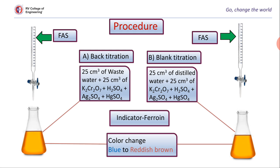Procedure: As mentioned, it consists of two parts — a back titration and a blank titration. For the back titration, 25 cm³ of wastewater is taken in a round-bottom flask. The same amount of potassium dichromate is added along with a sulphuric acid mixture containing silver sulphate and HgSO4. The resultant mixture is refluxed for about half an hour. After refluxing, the reaction mixture is cooled; it contains unreacted potassium dichromate. Its amount is calculated by titrating with ferrous ammonium sulphate using ferroin indicator. The color change observed is bluish-green to reddish-brown.